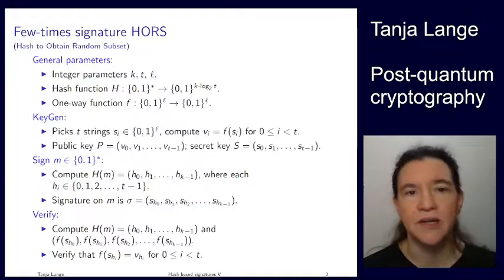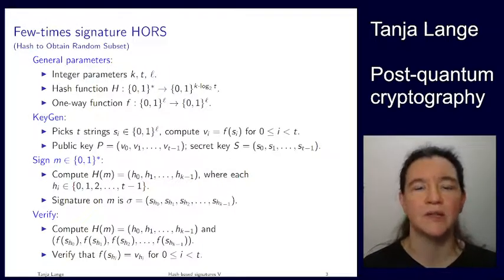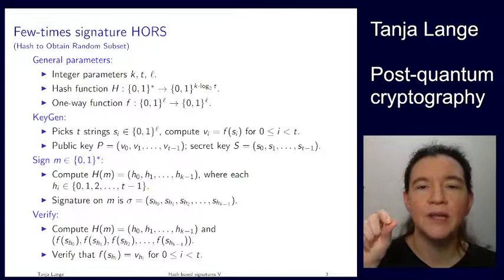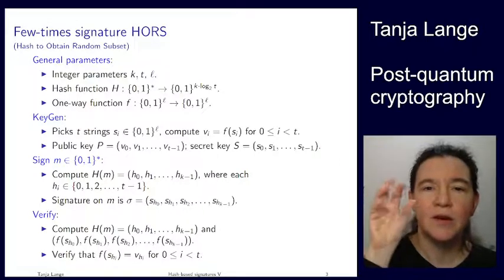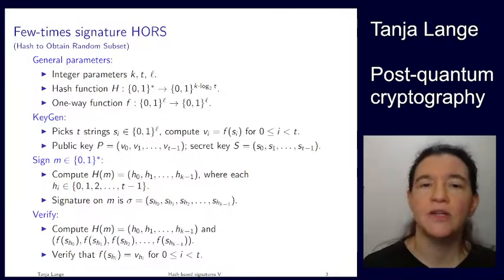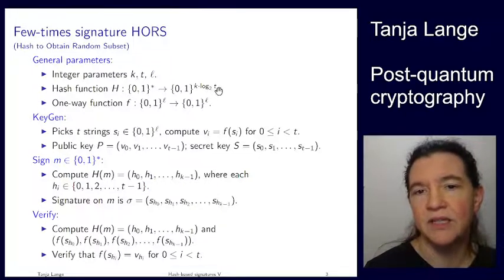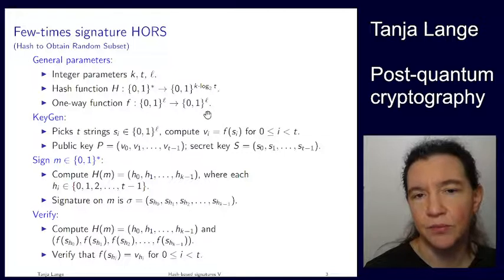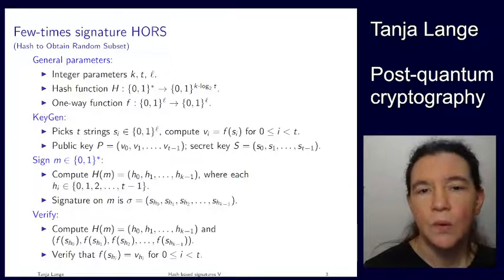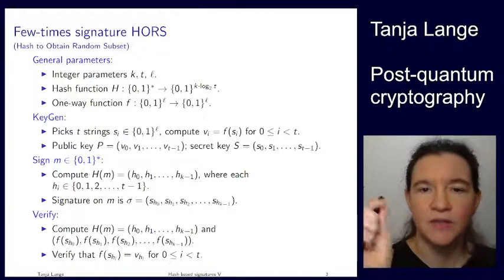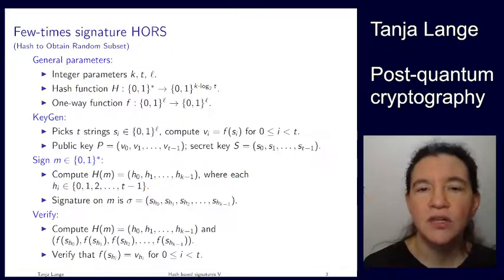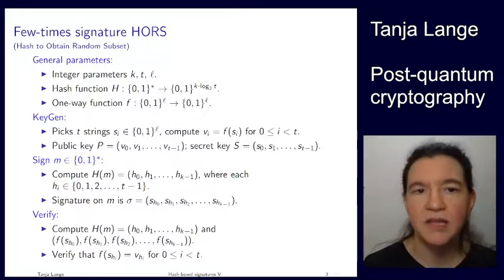So similar to what I explained already, our hash function now has multiple components and we're grouping them in log base 2 of t together. So this hash function looks just the same as on the previous page. And again, for simplicity, assume that t is the power of 2. So we're getting from arbitrary long messages to messages which have k positions, each of which is a number between 0 and t minus 1.